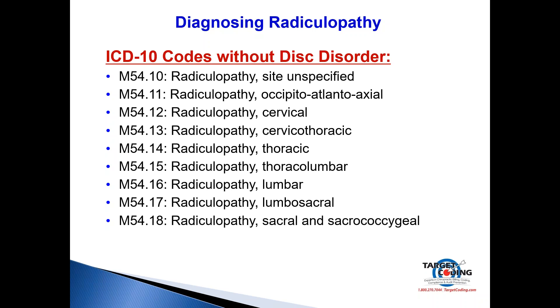Continuing: M54.14 is thoracic radiculopathy, M54.15 is thoracolumbar, M54.16 is lumbar radiculopathy, M54.17 is lumbosacral radiculopathy, and M54.18 is radiculopathy at the sacral and/or sacrococcygeal level. A common question is whether an MRI or CT scan is needed to justify a radiculopathy code versus a disc disorder code.